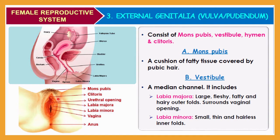Mons pubis is a cushion of fatty tissue, and it will look like a cushion covered by pubic hair, as you can see here.